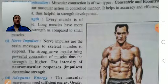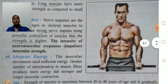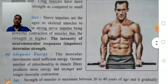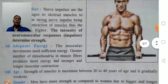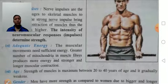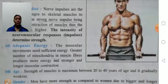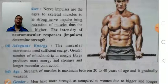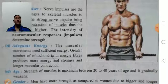Neuromuscular response: if the neuromuscular response is greatest, there will be more strength because the muscles contract fast, resulting in powerful contraction. Adequate energy: muscular contractions need sufficient energy. Persons who have greater mitochondria in the muscle fibers will have more production of energy, leading to strong and longer muscular contractions and therefore more strength.